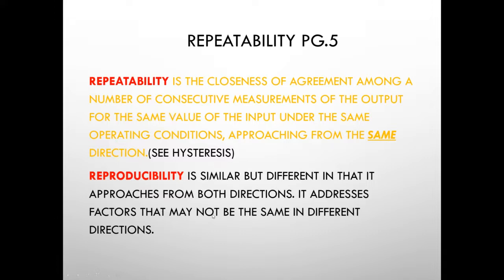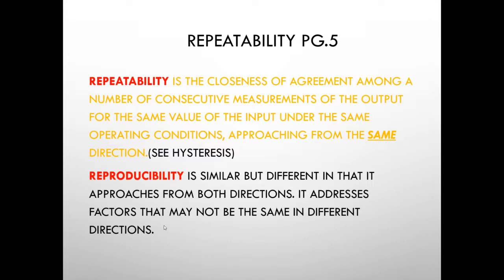Repeatability addresses factors that may not be the same in different directions. Some of you may have experience with a pressure or temperature switch — for example, a high temperature switch set to trip at 50°C. With a deadband of two or three degrees, the temperature goes up, hits 50, the switch trips. Ideally you want it to reset at 50, but it might reset at 52 or 49. Consistent reactions are the goal of a control system. Reproducibility is similar to repeatability but approaches from both directions; repeatability is going one way multiple times, and it's easier to achieve than reproducibility.